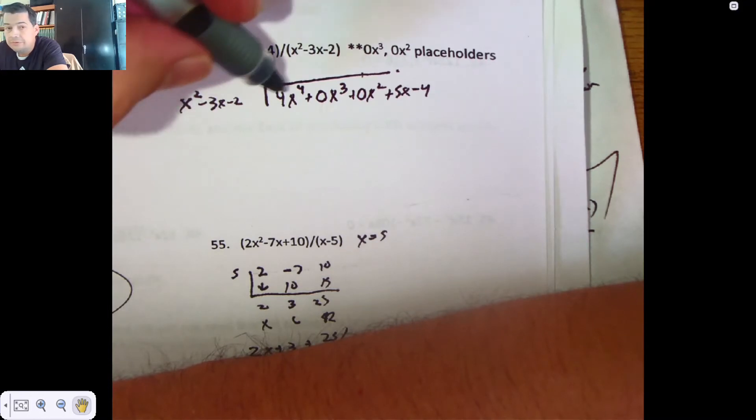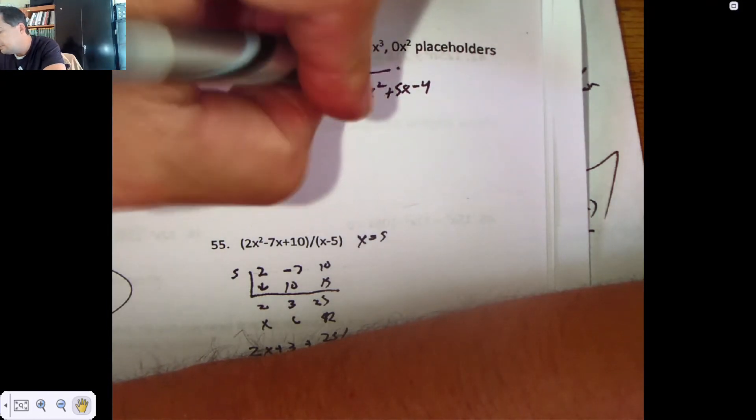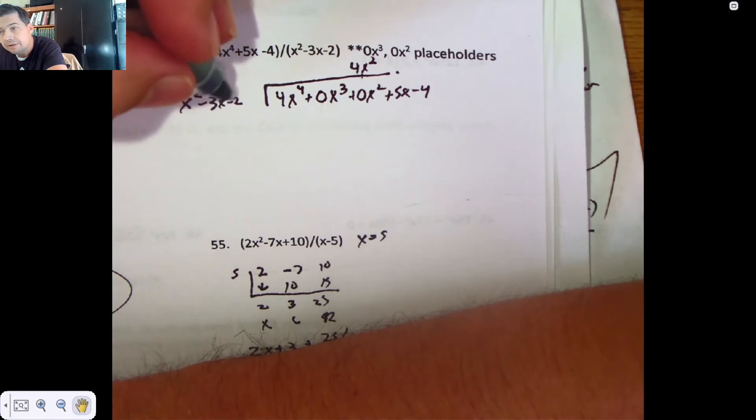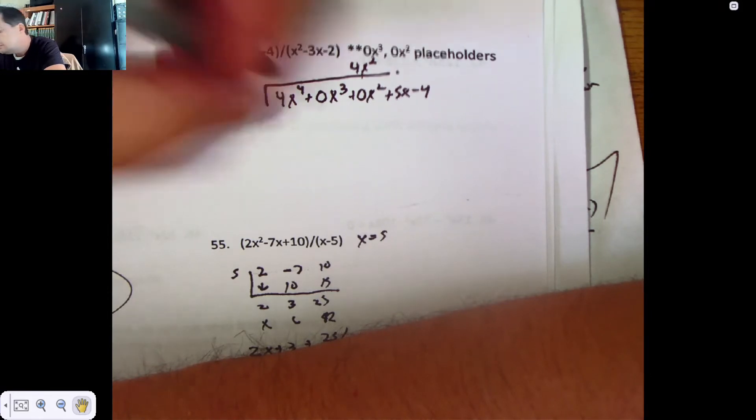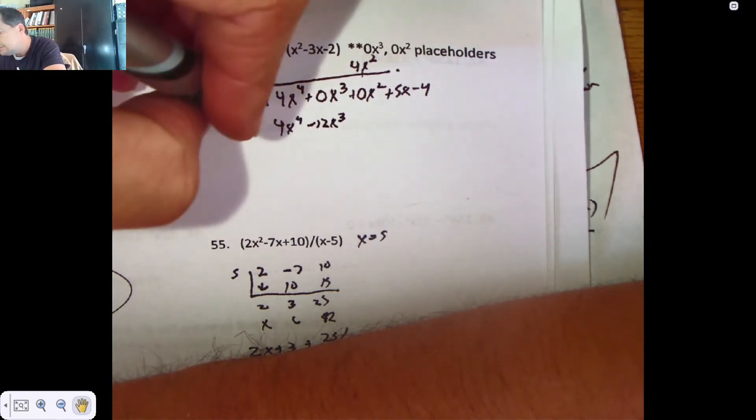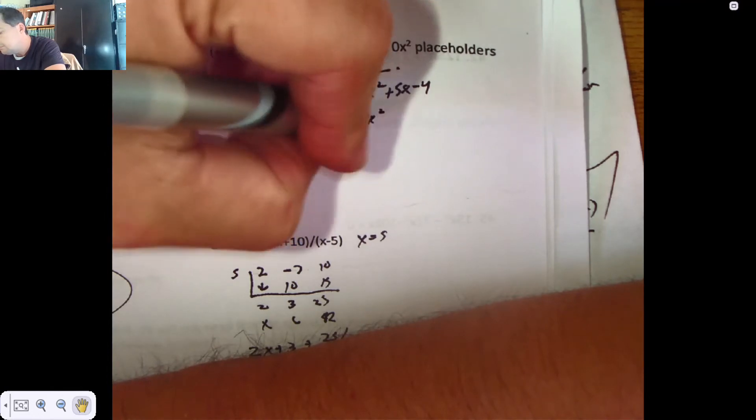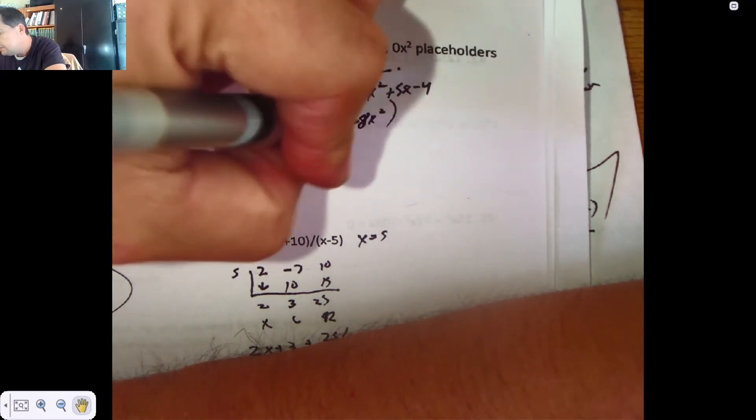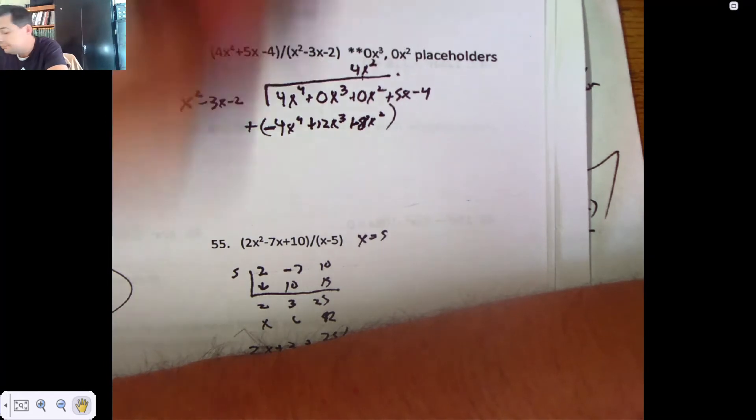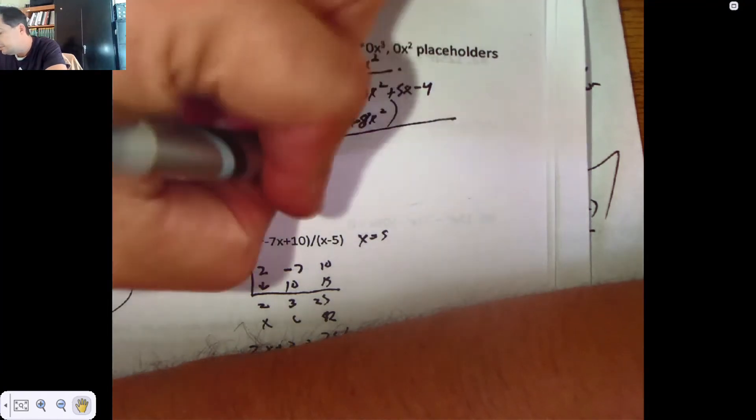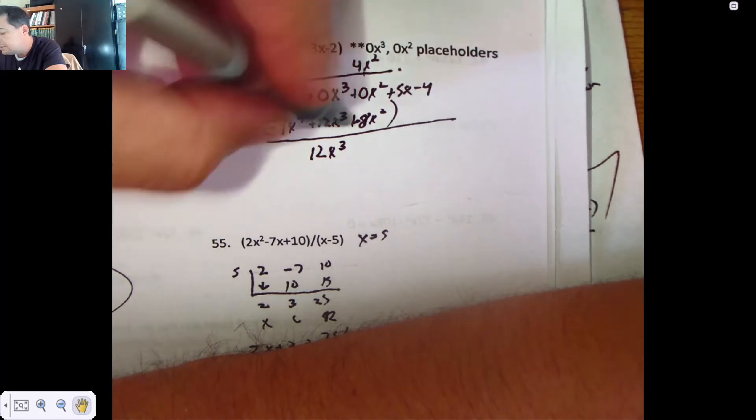I'm going to divide it by x squared minus 3x minus 2. And to turn an x squared into a 4x to the 4th, I have to multiply by 4x squared. And then I invoke what's called the distributive property. I distribute this 4x squared to all three pieces of the dividend. That'll give me 4x to the 4th, take away 12x cubed minus 8x squared. Now, you're going to subtract this entire line. And that's going to change the signs on everything. So, 4x to the 4th minus 4x to the 4th is nothing. 0 plus 12 is 12. And 0 plus 8 is 8x squared.